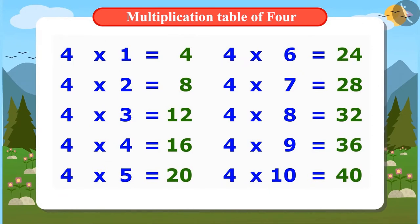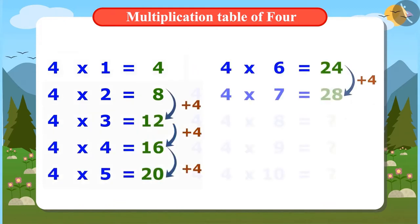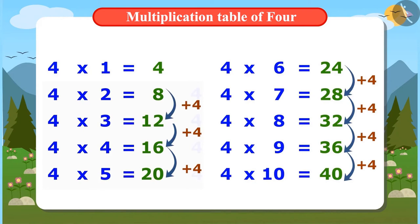This is fun. To find the multiplication table of 4, write 4 first and add 4 to it. Add 4 again to the result. Keep doing this till you get the whole multiplication table.